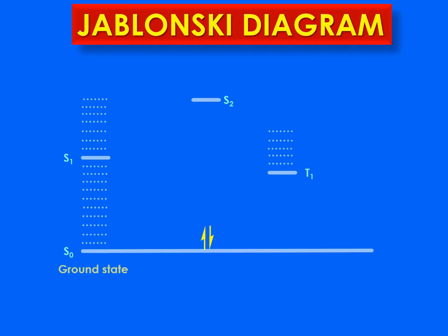Now let's discuss the Jablonski diagram. We have electrons in the ground state S0. When they are hit by radiation — energy provided in the form of light — one electron jumps from S0 to the S2 excited state. Remember that the spin of the electron does not change during this process. This process of the electron jumping from S0 to S2 is known as excitation, and it happens because of absorption of energy from light. Now let's see the fate of this electron in the excited state.